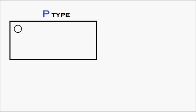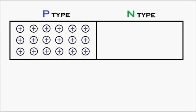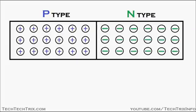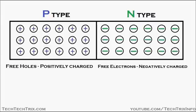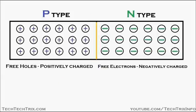The P-type semiconductor has holes which are positively charged, and the N-type semiconductors have electrons which are negatively charged. Free holes are available in the P-type and free electrons are available in the N-type. The region where the P-type and the N-type join is the junction, which is called the PN junction.